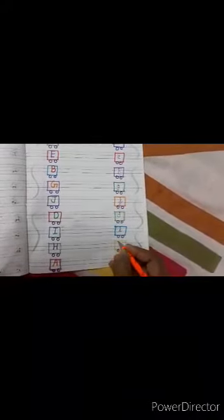H, right small H. A, right here small A. Okay children, once again repeat.